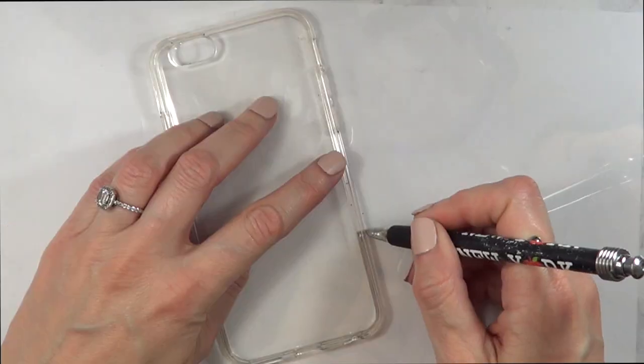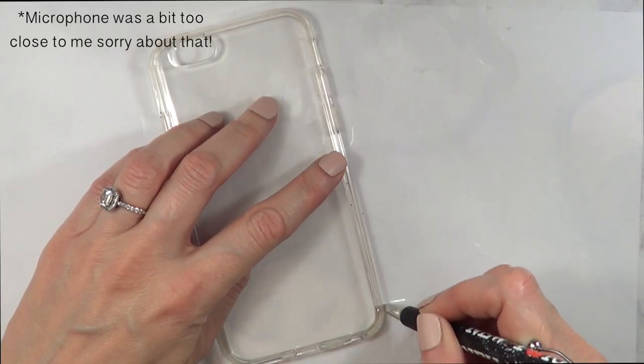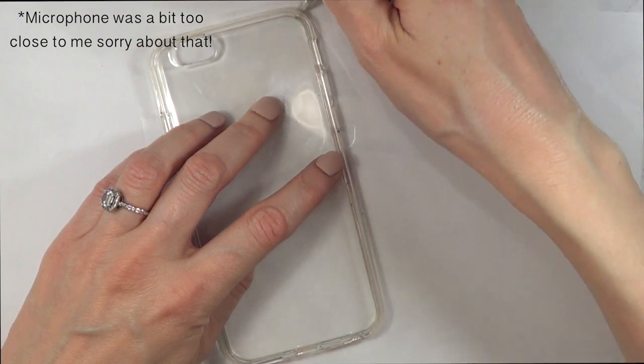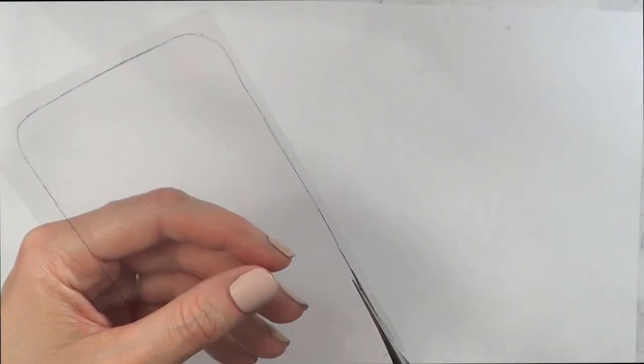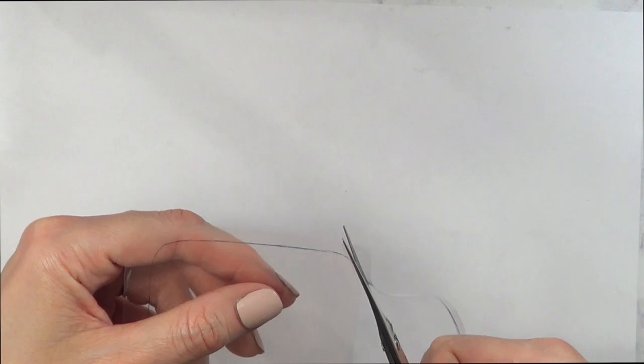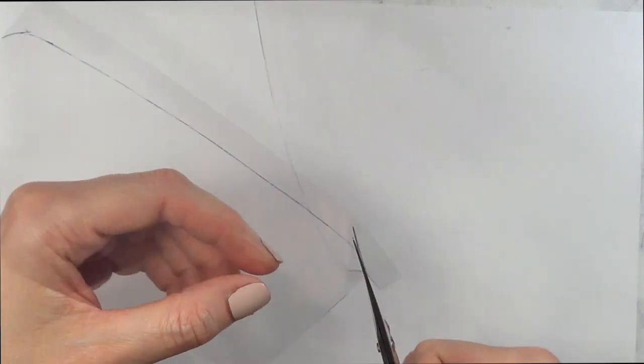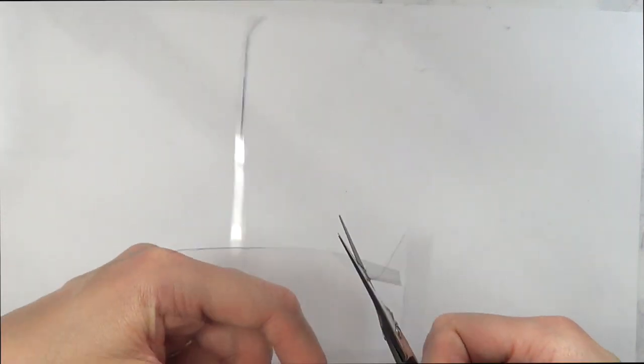Then I'm going to be using this acetate sheet and I'm just going to be placing my phone on top and with my pen, I'm going to pretty much mark where the shape of my phone case is. It's pretty simple. And then I'm just going to cut it, but I'm going to cut it a bit smaller because this is going to be inside of the case.